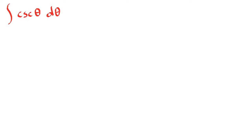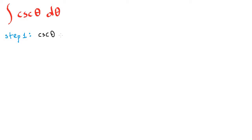Hi everyone. In this video we're going to integrate cosecant theta d theta. For this integration we have two alternatives. I'm going to go through one of the alternatives, and at the end of the video I'm going to give the recipe of the second alternative. Let's begin. As our first step, we are going to expand cosecant theta with cosecant theta plus cotangent theta.